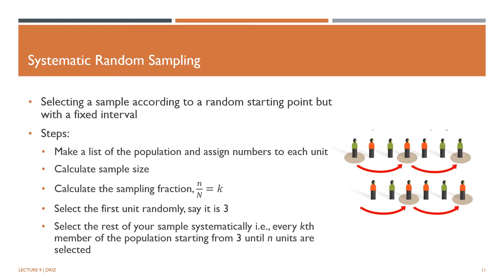Systematic random sampling is a variant of simple random sampling which involves choosing from a randomly selected starting point on the population list in a systematic way. The general steps are: make a list of the population and assign sequential numbers, calculate sample size, then calculate the sampling fraction — taking the number of required sample size over the population size. If the sampling fraction is k, the researcher picks every kth element from the sampling frame. Then select the first unit randomly. Say it is 3 — select the rest of your sample systematically, every kth member starting from 3 until n units are selected.